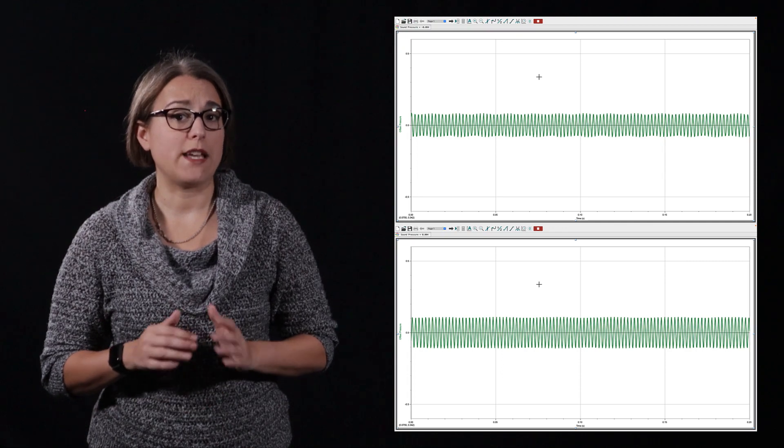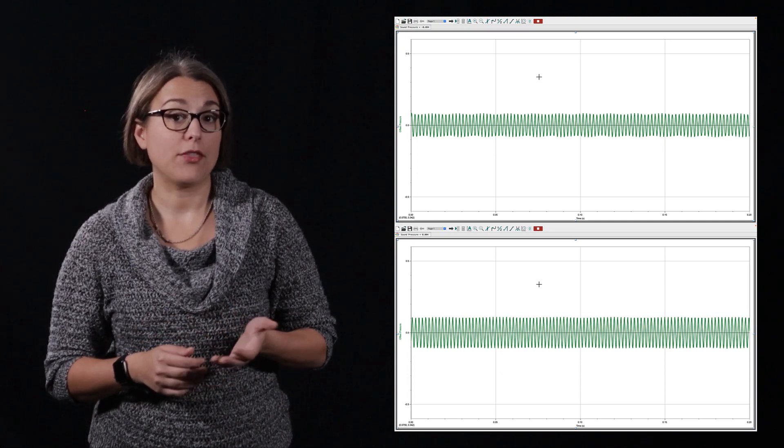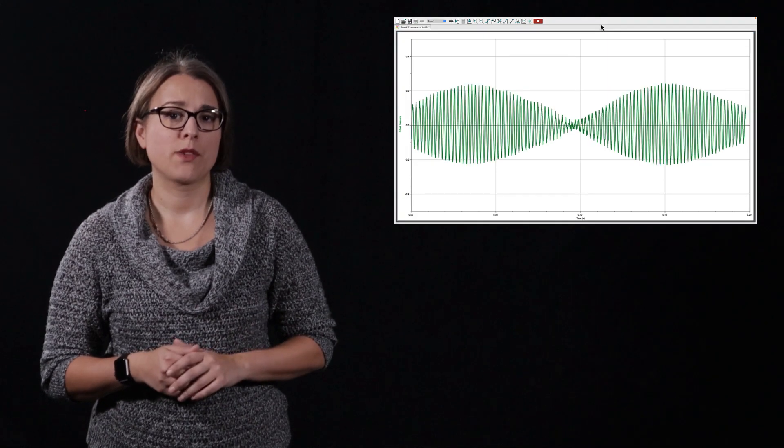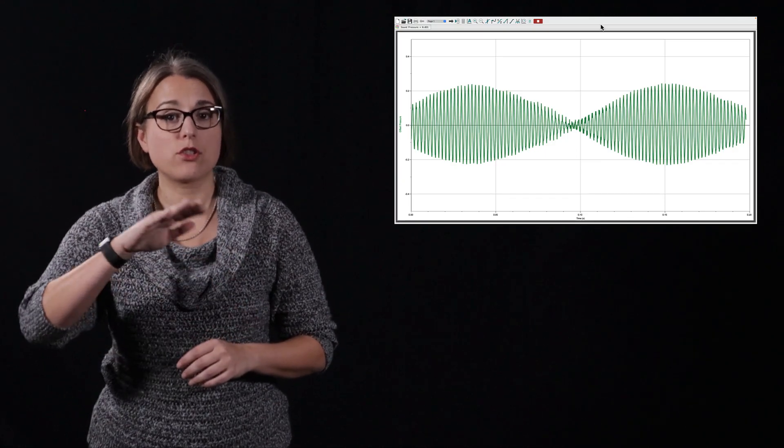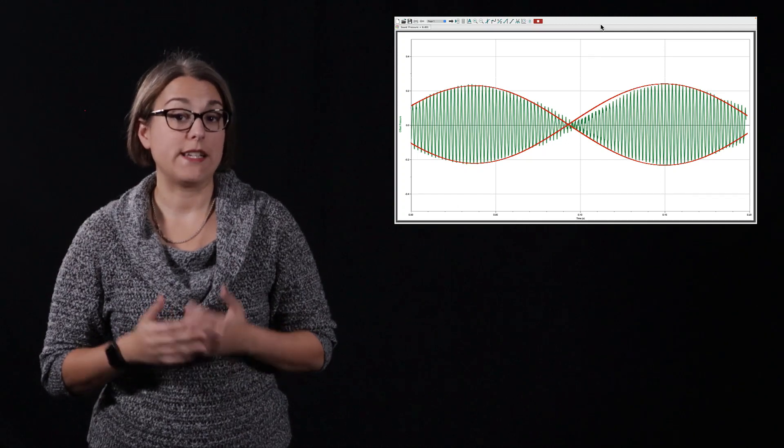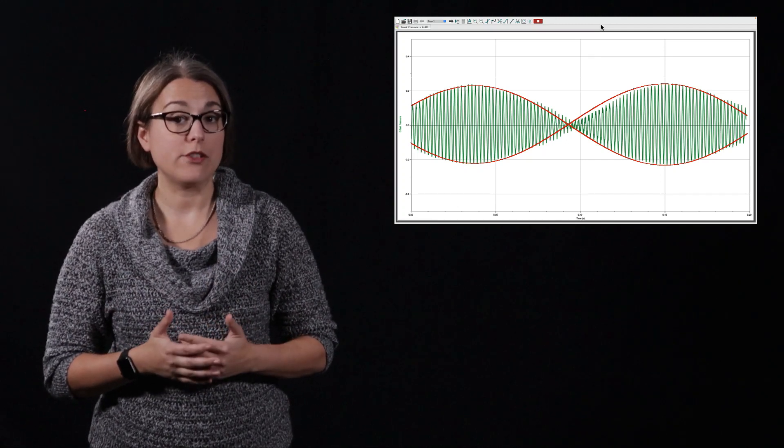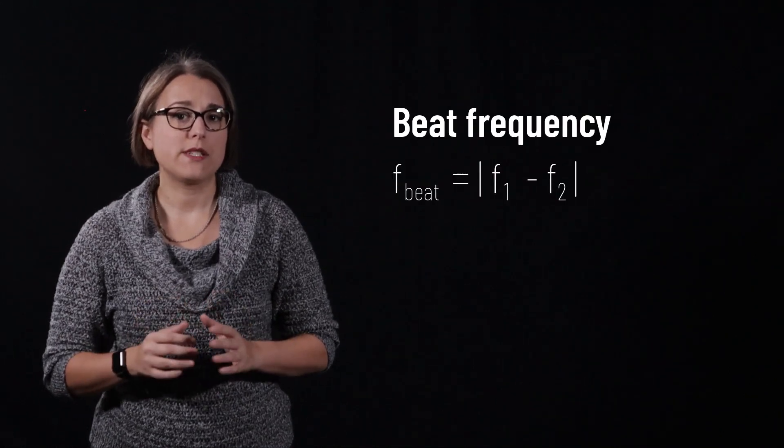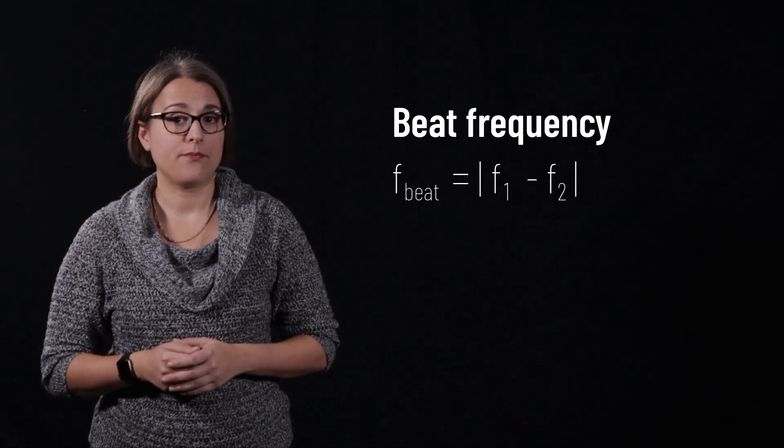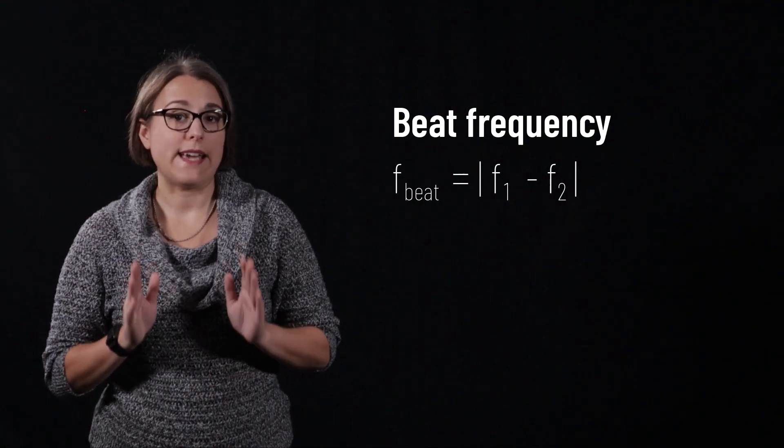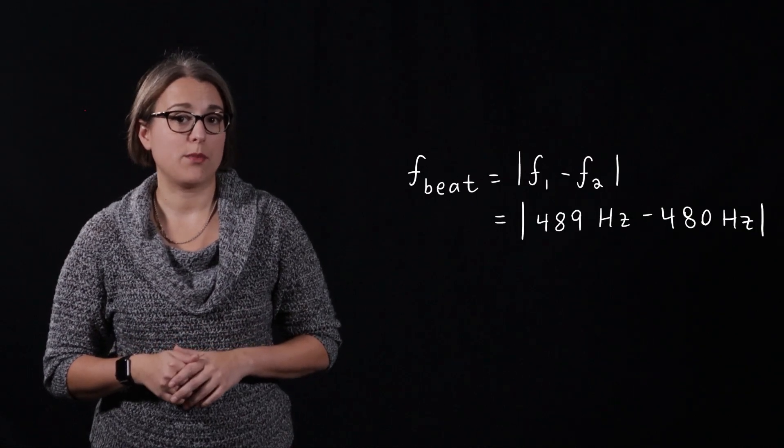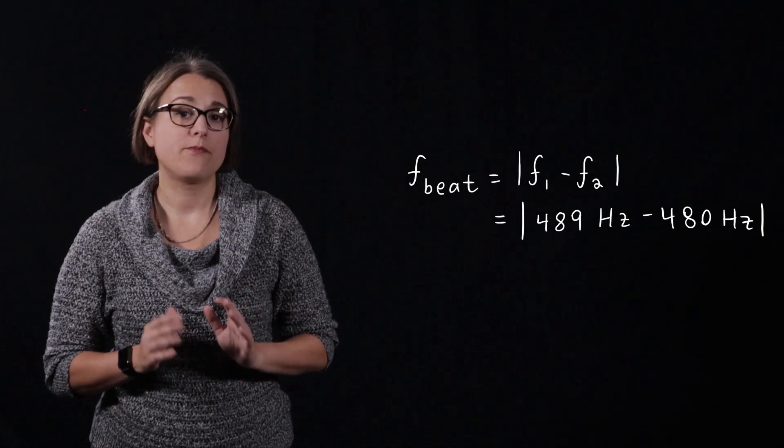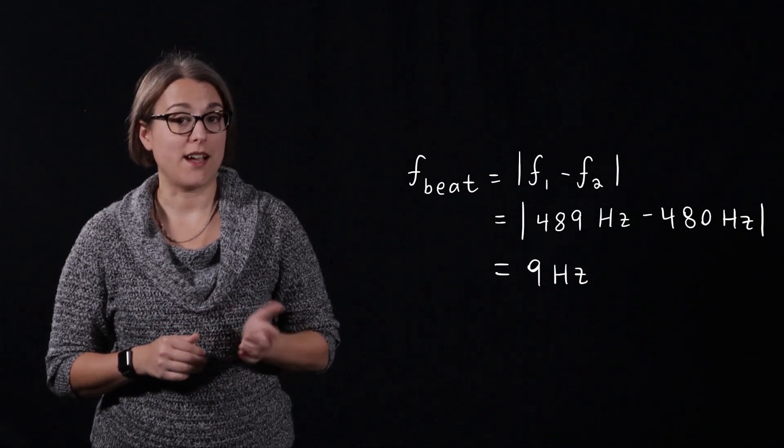I recorded the sound sources using Logger Pro. Both of the pure tones show a normal oscillation with a constant amplitude at the frequency of each individual sound source. When I recorded the sound sources playing together, the graph shows a very fast oscillation superimposed with a slow oscillation. That slow oscillation is the beat oscillation and is caused by the interference of the two waves. The frequency of a beat can be calculated using an equation. The frequency of the beat is equal to the absolute value of one frequency subtracted from the other. In the case of our audio example, the beat frequency is the absolute value of 489 Hz minus 480 Hz, which is 9 Hz.